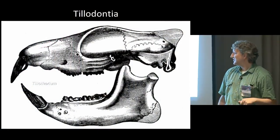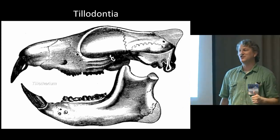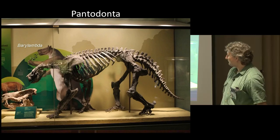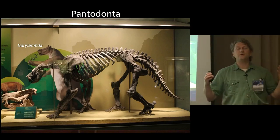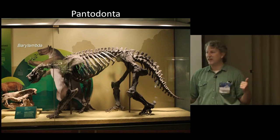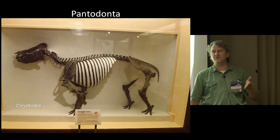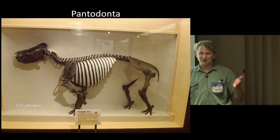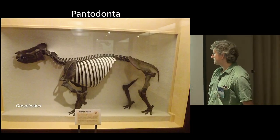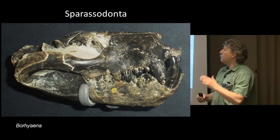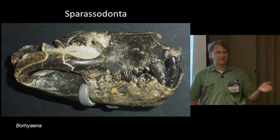There are also tilodonts and pantodonts - the pantodonts were bulky animals and include the first really large-bodied placental mammals, ranging from the size of a black bear up to about a small rhino. Barylambda is one example; Coryphodon is one of the most common ones - if you work in Eocene deposits of eastern North America in the right formations, Coryphodon bits are among the most common things you encounter. There are also stem marsupials - the sparacodonts - which are outside Marsupialia proper.